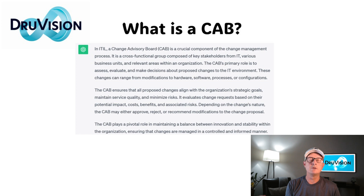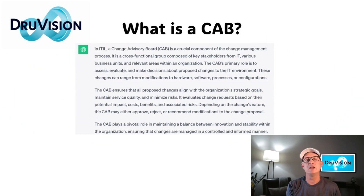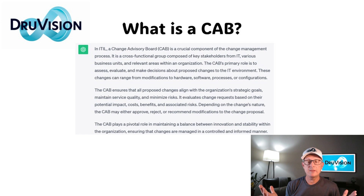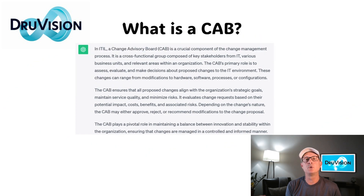Typically there's a CAB leader — somebody in the CIO office whose role covers these ITIL functions, one of which is leading the CAB meeting. That means setting the agenda, with your most critical changes first, then medium and low subsequently. The only escape to the CAB process would be emergency changes, which typically have a delegate or change approvers for those exception circumstances, whether in IT itself, the business, or generally both.